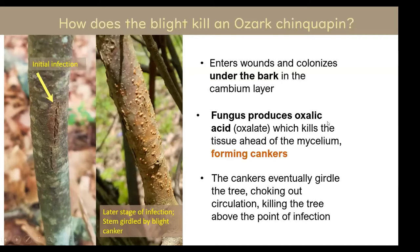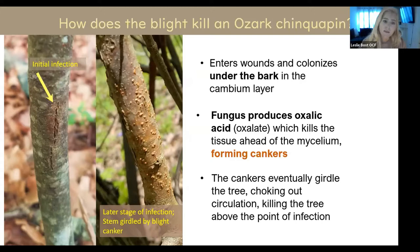So how does the blight actually kill an Ozark chinquapin? The way that the blight kills a chinquapin is that it's a fungus that produces an acid. That acid actually kills the tissue. The chestnut blight lives on the dead matter of its host.